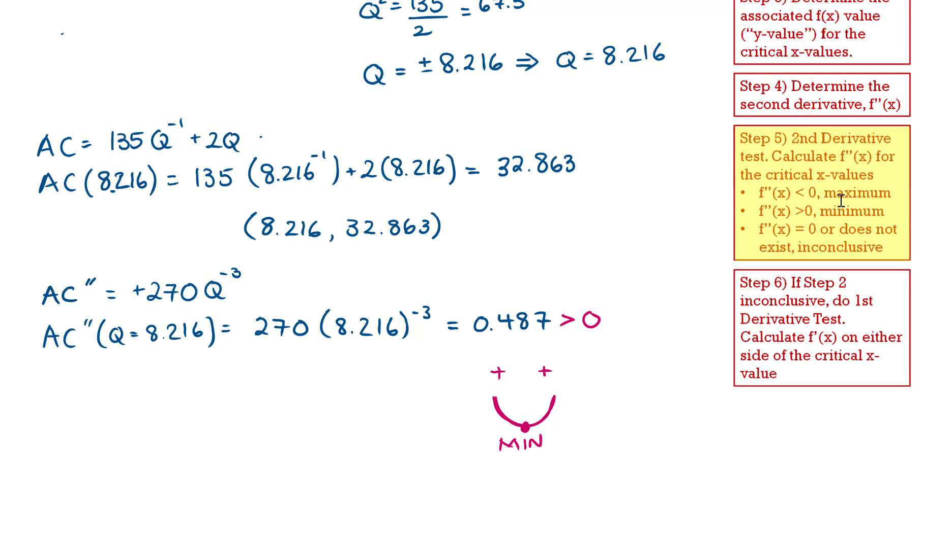So now since my second derivative test was conclusive, I don't have to worry about step 6. And I'm pretty much done. I just need to make it clear what my final answer is, that Q is equal to 8.216 when average cost is a minimum of 32.863.